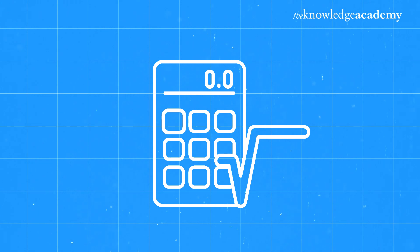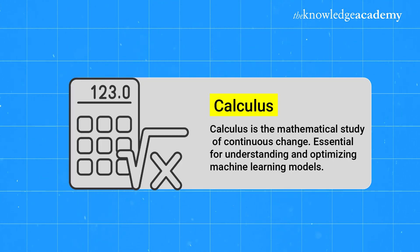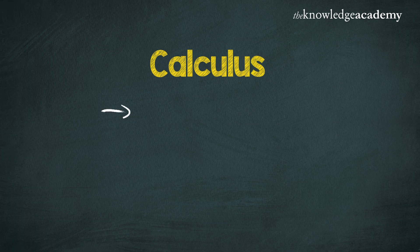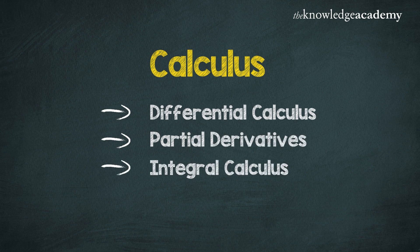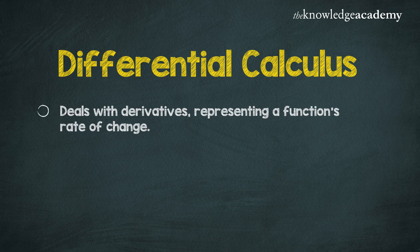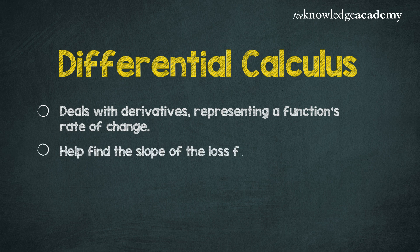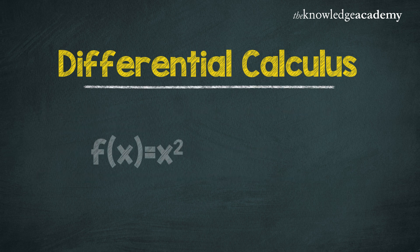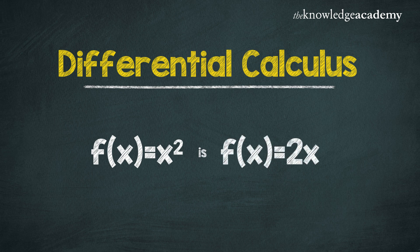That's it for the linear algebra part. Finally, let's move on to calculus. Calculus is the mathematical study of continuous change, and it is essential for understanding and optimizing machine learning models. Differential calculus deals with the concept of a derivative, which represents a function's rate of change. In machine learning, derivatives help us find the slope of the loss function and are crucial for optimization algorithms like gradient descent.